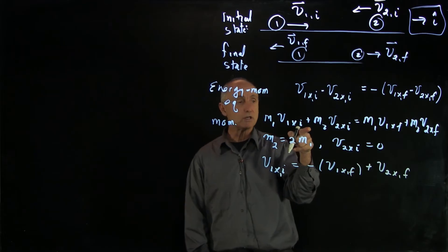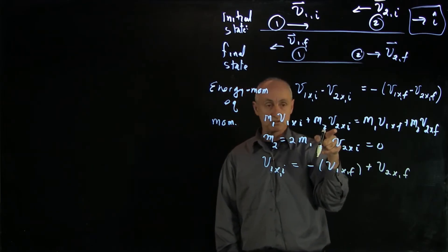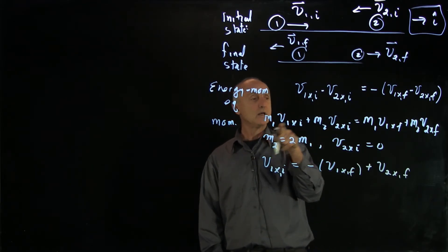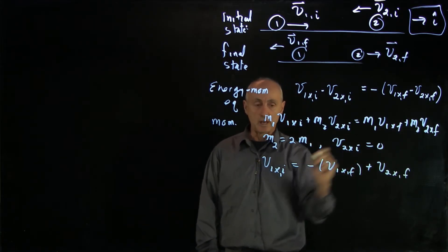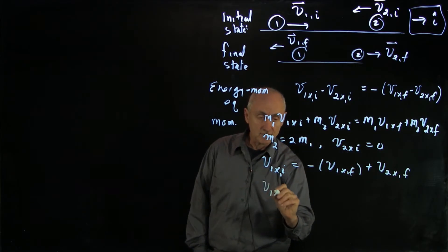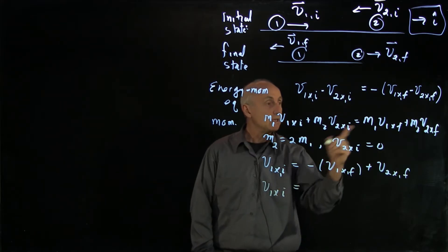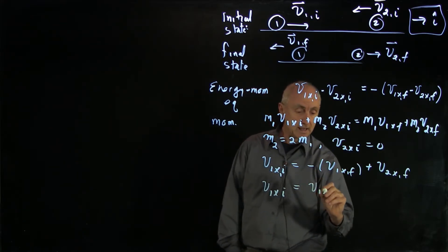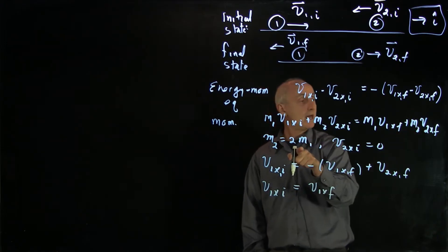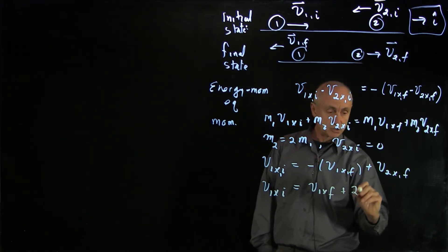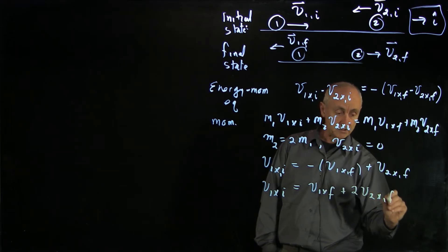And our momentum condition, remember v2 x initial is 0. The m2 will be 2 m1, so we can cancel our m1s. And we get v1 x initial equals v1 x final. And m2 is twice m1, so there's a factor plus 2 v2 x final.